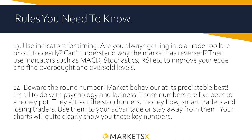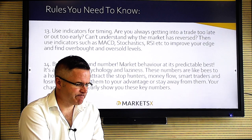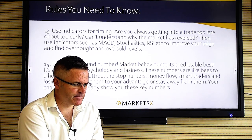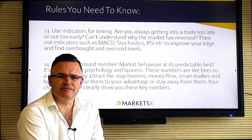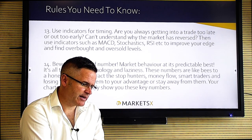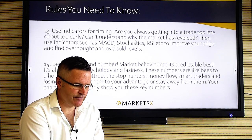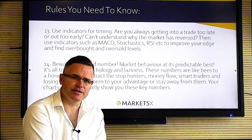Rule thirteen: timing your entries. If you just plump yourself into a trade you can wear a lot of risk while you wait for it to turn good. Technical analysis has created many tools to aid this — things like the Stochastic indicator, RSI, and MACD, all different paced but they'll help with your entry and exit. Rule fourteen: beware of round numbers — the Footsie at 7,000, the yen at 120, oil at 100 dollars. These numbers become magnets for price behavior, attracting stop hunters and smart money. Stay away from round numbers unless you have a particular strategy to play them.